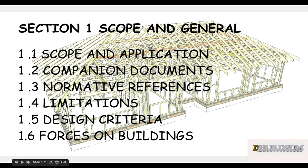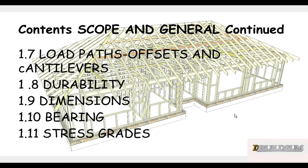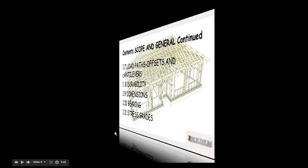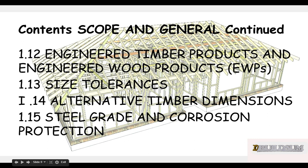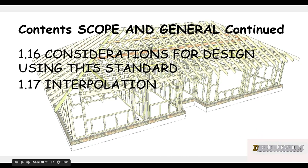Section 1 also looks at design criteria, the forces on the building that it takes into consideration. It talks about load paths, offsets, and cantilevers. It looks at the durability of the timber, talks about how the code measures dimensions, bearing of timbers, and stress grades. It also looks at engineered timber products and engineered wood products, tolerances, alternative dimensions, steel grade, corrosion protection, considerations for design under the standard, and interpolation.